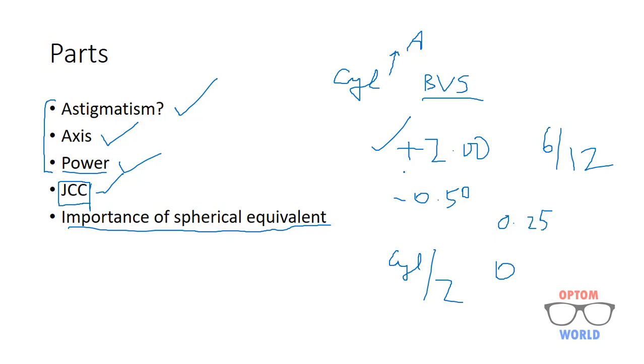So half of minus 0.50 is 0.25. And here it is minus, so you will consider plus. So you will add plus 0.25 to plus 2, and your number will become plus 2.25 with minus 0.50 cylinder.